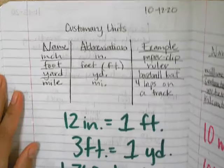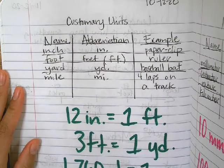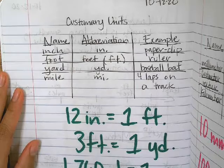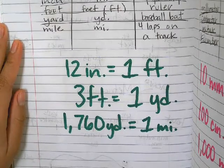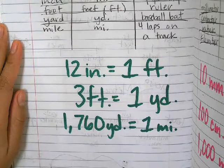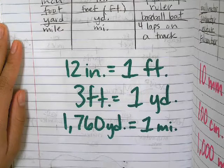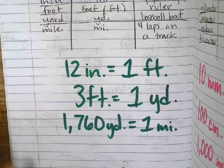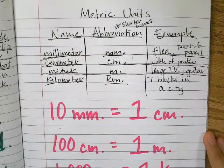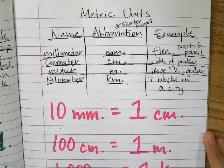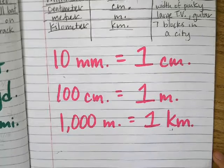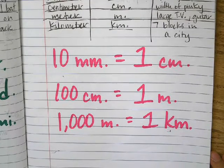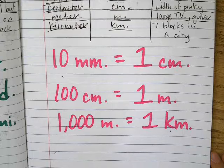We did a table for customary units: inch, foot, yard, and mile, with conversions — 12 inches is one foot, 3 feet is one yard, and 1,760 yards is one mile. For metric units, abbreviations are just shorter names. We have millimeter, centimeter, meter, and kilometer. The conversions are: 10 millimeters is one centimeter, 100 centimeters is one meter, and 1,000 meters is one kilometer.